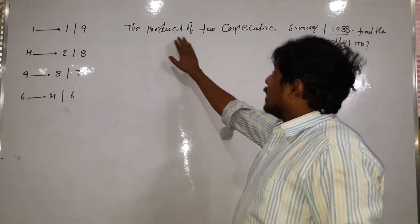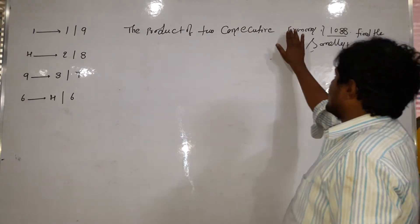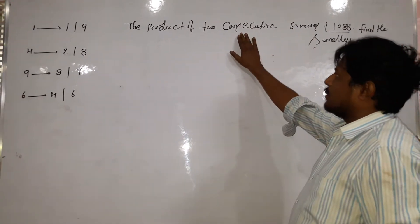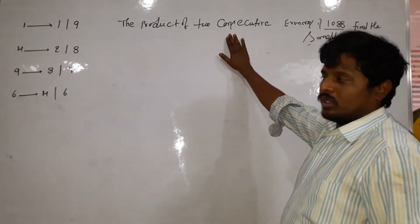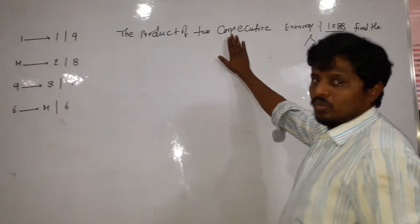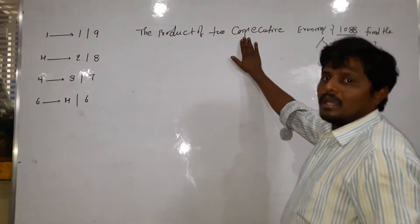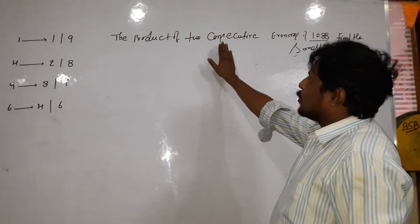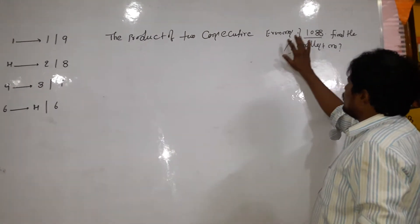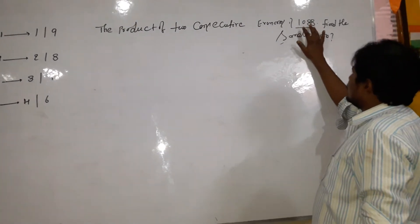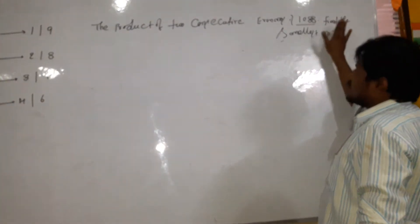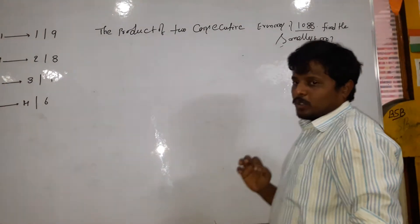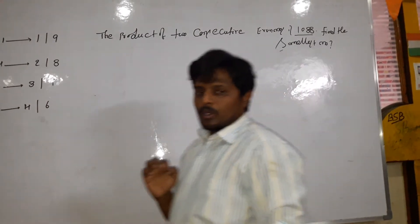The product of two consecutive even numbers — one of them is consecutive to the other. The product of two consecutive even numbers is 1,088. Find the smallest number. As you can see, this is the first problem.